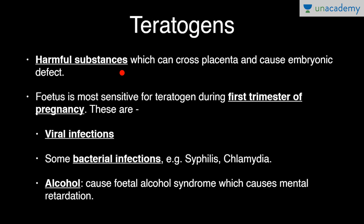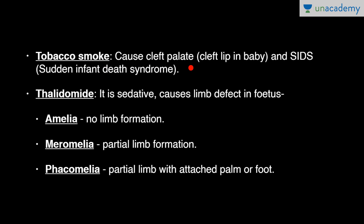Teratogens are harmful substances which can cross the placenta and cause embryonic defects. The fetus is most sensitive to teratogens during the first trimester of pregnancy, because it is still developing. Teratogens include viral infections, some bacterial infections such as syphilis and chlamydia. Alcohol causes fetal alcohol syndrome, which leads to mental retardation. Tobacco smoke causes cleft palate and SIDS — sudden infant death syndrome.